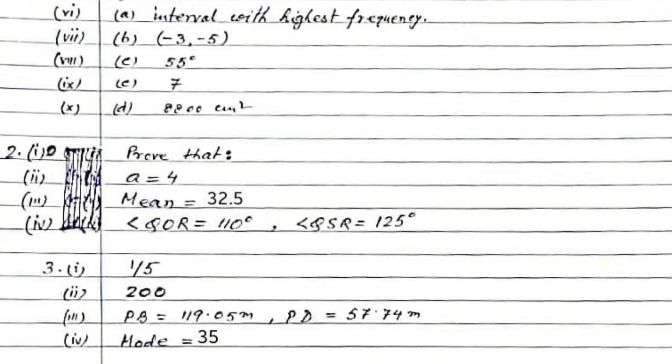Let us now look at question number 3, the fourth part. Marks obtained by 100 students in an examination are given below. Draw a histogram for the given data using a graph paper and find the mode. The mode will be 35.